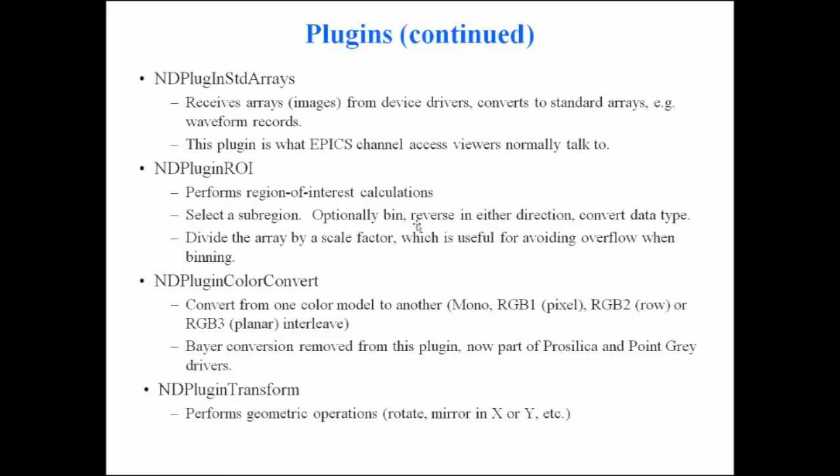There's a region of interest plugin that selects a sub-region from the image. It can optionally bin in any direction, reverse the order in any direction (flipping the image left-right or up-down), and convert the data type. It can divide the array by a scale factor — for example, if you're binning 2×2 on 8-bit images, summing four pixels could overflow, but it does the calculation in double and divides by a user-defined scale factor to return to 8-bit.